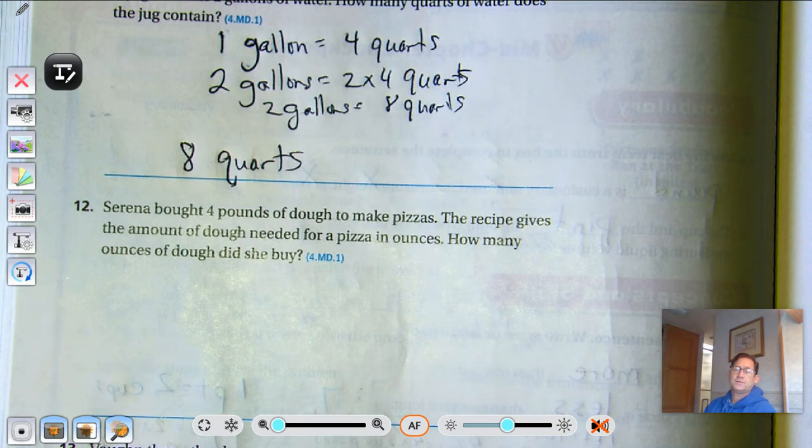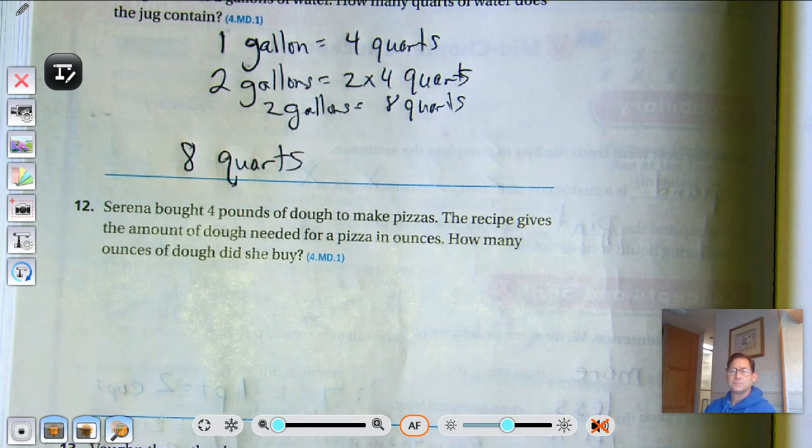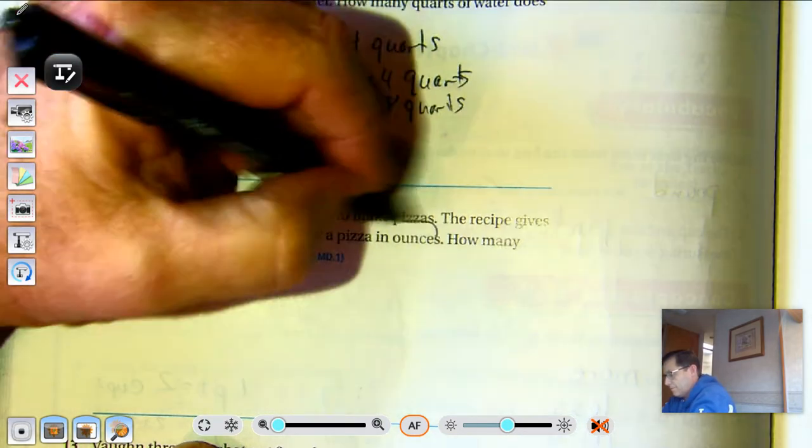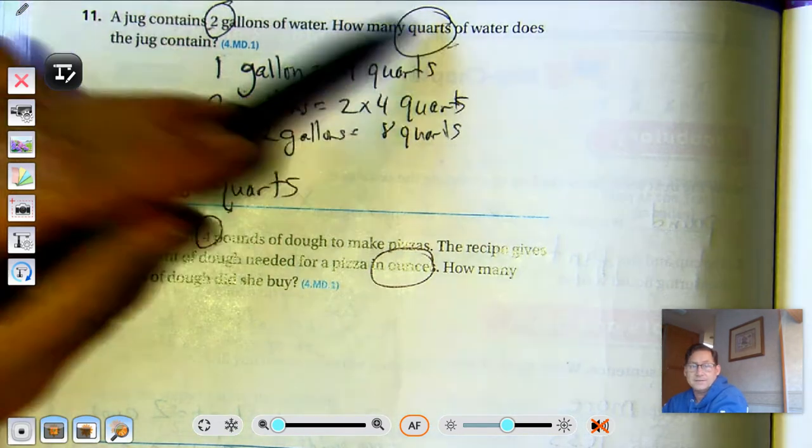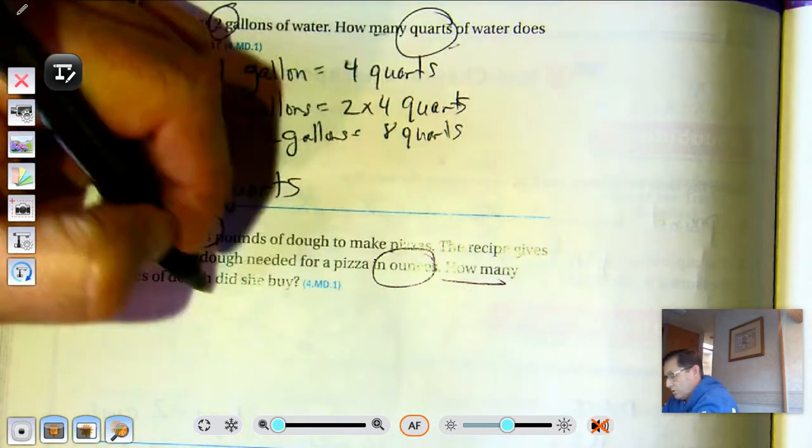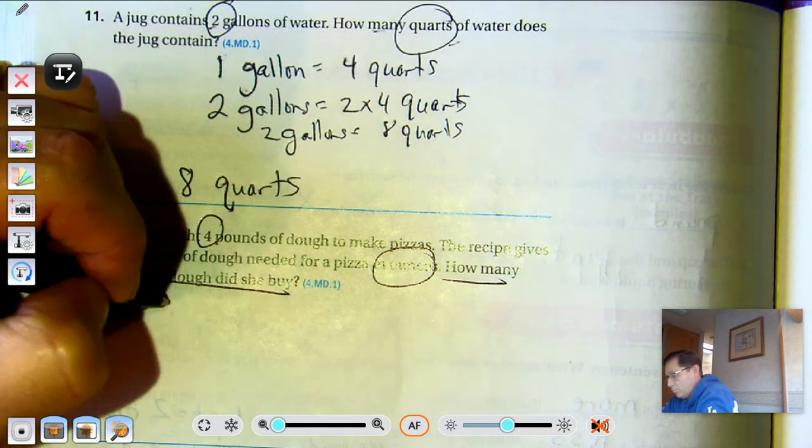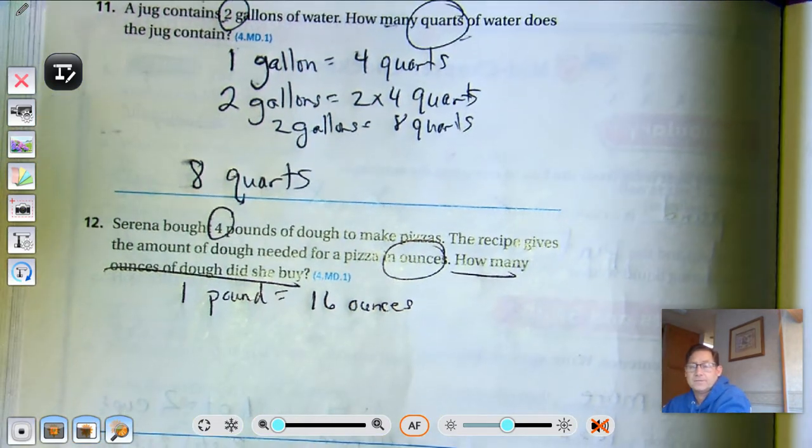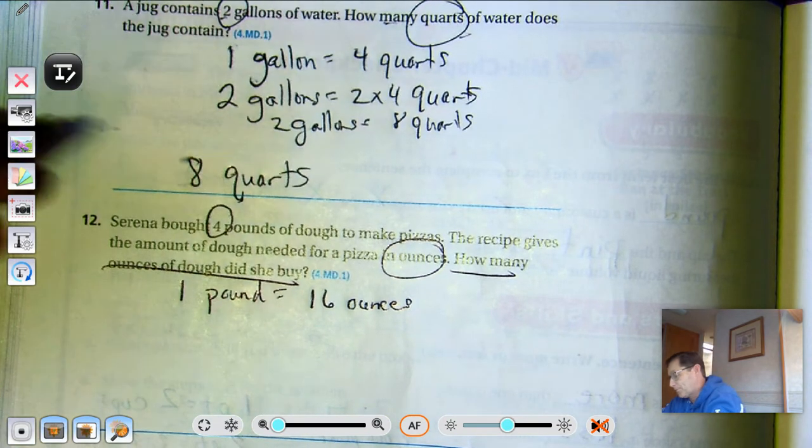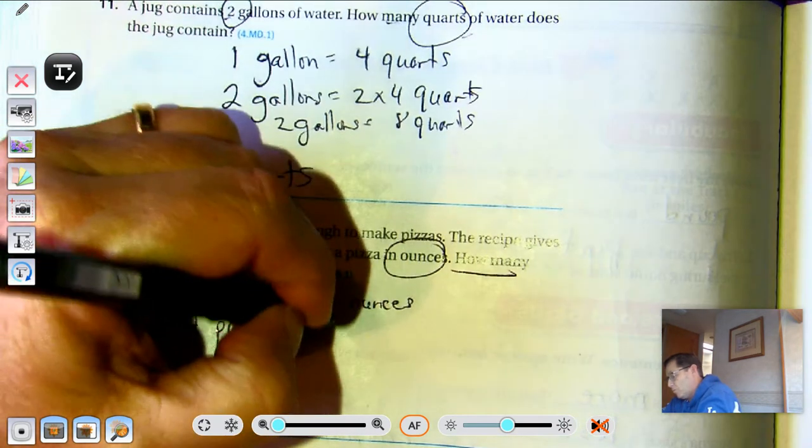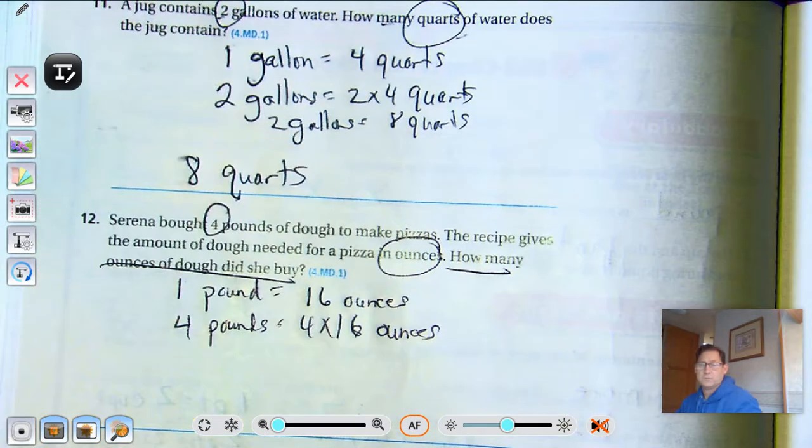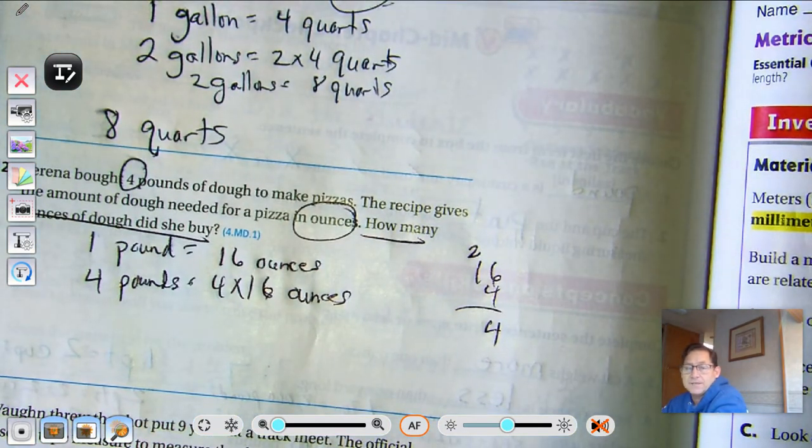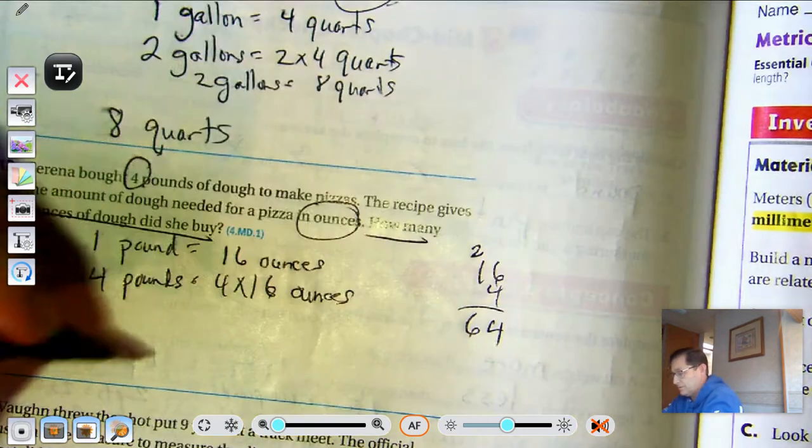Serena bought 4 pounds of dough to make pizzas. The recipe gives the amount of dough needed for a pizza in ounces. How many ounces of dough did she buy? We're going to change 4 pounds to ounces. We know that 1 pound is 16 ounces. So 4 pounds would be 4 times 16 ounces. 4 times 6 is 24, regroup that as 2 tens and 4 ones. 4 times 1 ten is 4, plus 2 regrouped tens is 6. So 64 ounces.